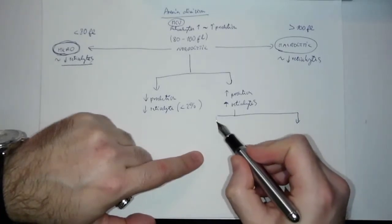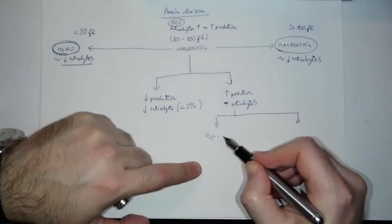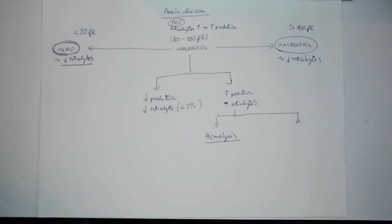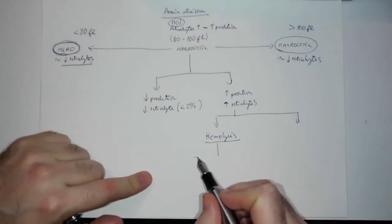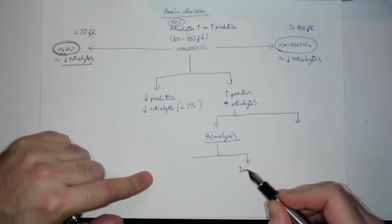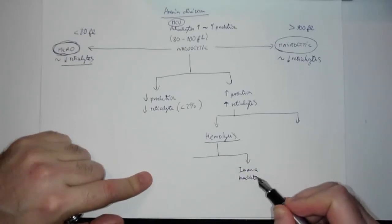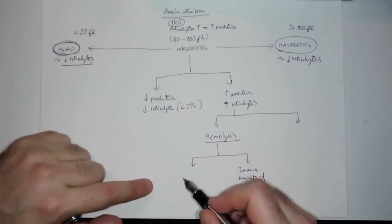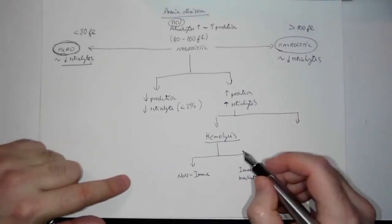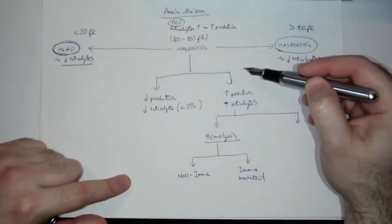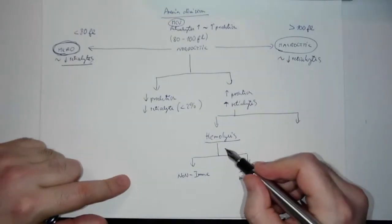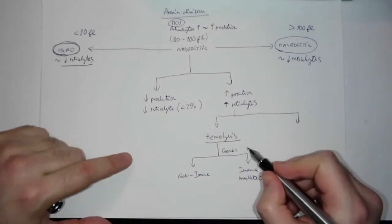If reticulocytes are increased, I'm losing erythrocytes somehow. The first option is destruction due to hemolysis, which is a big group. Hemolysis can be due to an immune problem — immune-mediated — or it can be non-immune, such as mechanical destruction. After confirming normocytic anemia with increased reticulocytes and suspecting hemolysis, we do the Coombs test. If the Coombs test is positive, it's very likely immune-mediated.